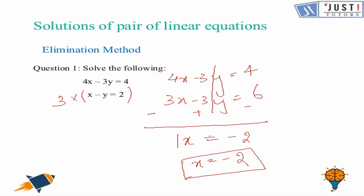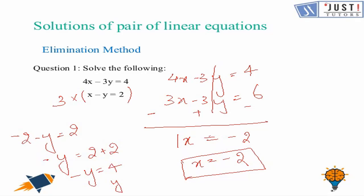Now we substitute x equals minus 2 into the second equation: minus 2 minus y equals 2, which gives minus y equals 2 plus 2, so minus y equals 4. Therefore y equals minus 4. The answer is x equals minus 2 and y equals minus 4.